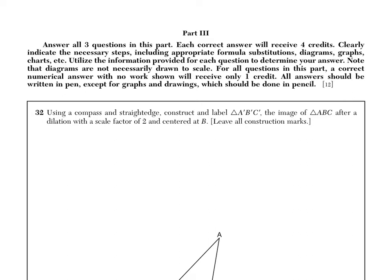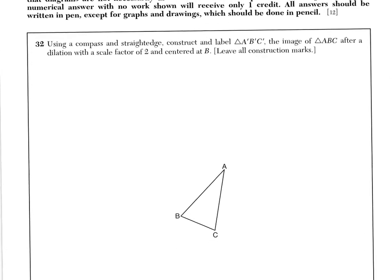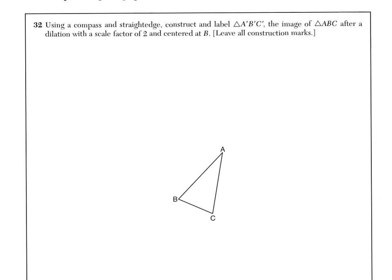Alright, welcome back for part three. Remember these questions are all worth four points. Now once again we have another construction here. It says using a compass and a straight edge, construct and label triangle A'B'C', the image of triangle ABC after a dilation with a scale factor of two centered at point B.